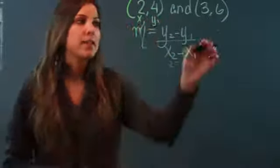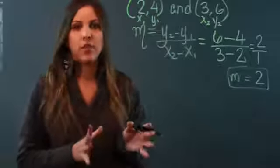I can simplify that further because 2 divided by 1 is just 2. So that means that my slope is 2. That's how you find the slope.